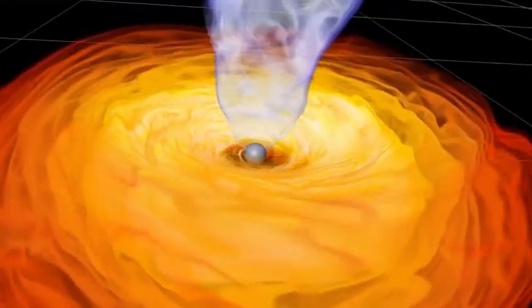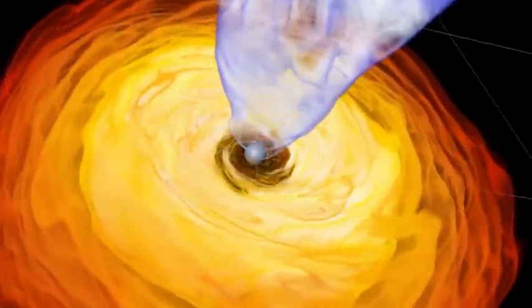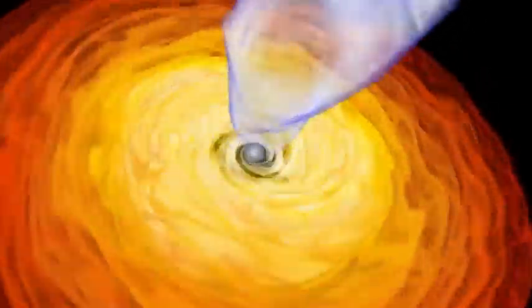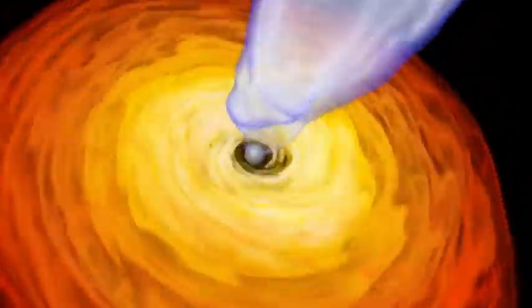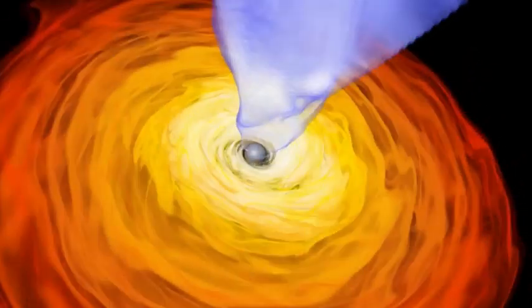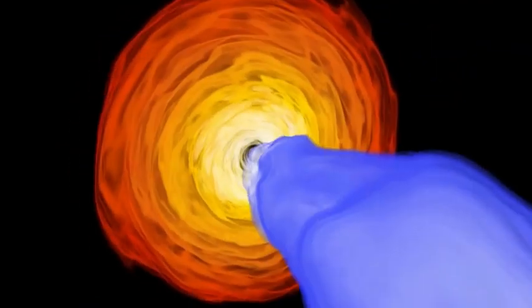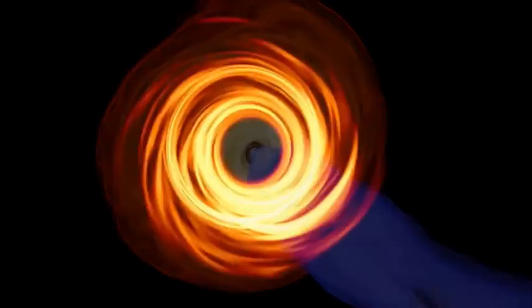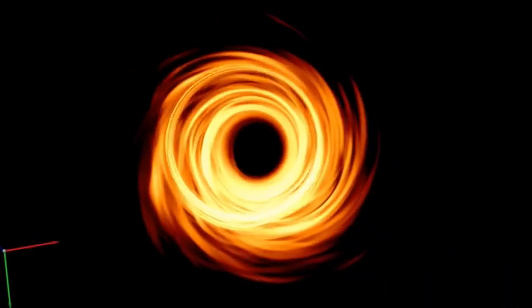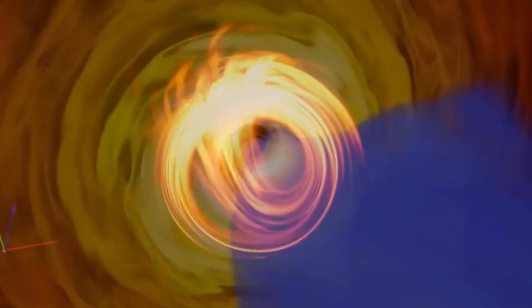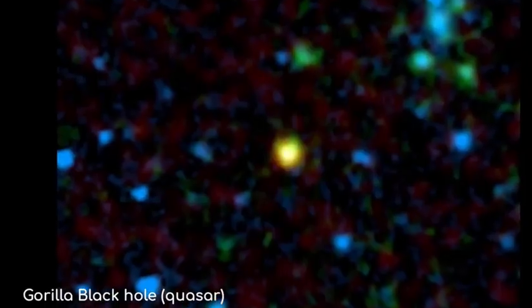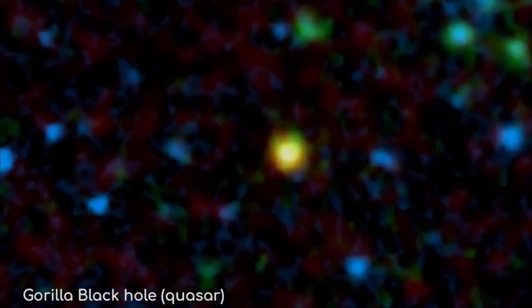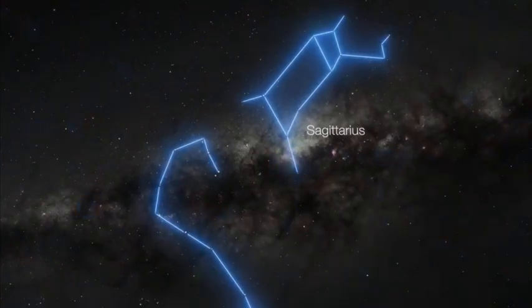Despite its ordinary-sounding name, SS 433 is quite extraordinary. It features a Type A supergiant star orbiting a stellar-mass black hole in a binary system. As the black hole pulls in material from the supergiant, it produces a pair of jets that shoot out perpendicular to our line of sight. This means the jets themselves won't hit us or our detectors directly. However, as these jets travel outward, they emit light in all directions, allowing us to observe them at various wavelengths and gain valuable insights into how they are generated.